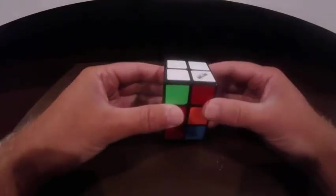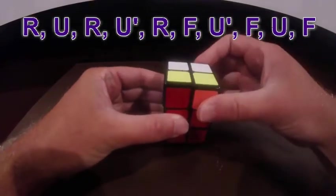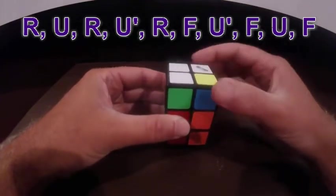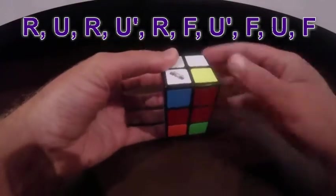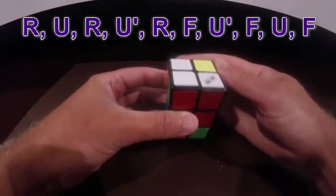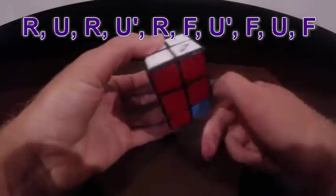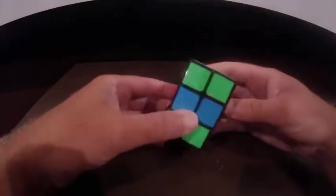Okay, so the algorithm is right, up, right, up prime, right. And then front, up prime, front, up, front. So now you can see that they're solved all the way around.